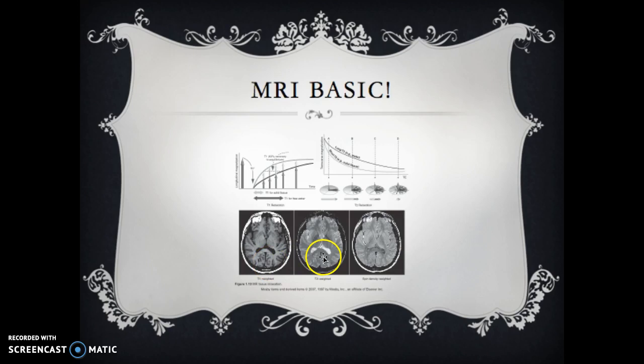In between that 800 to 4,000, we're looking at a proton density. We're going to take the TR, and if the doctor says he wants it more T1 weighted, we're going to take it closer to the 800. If the doctor says I want it more T2 weighted, we're going to bring it up around 4,000.